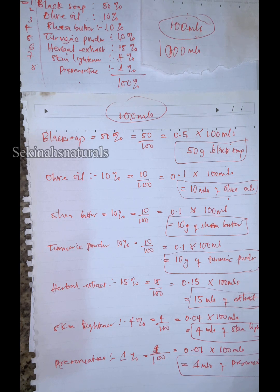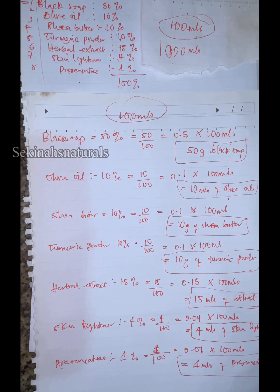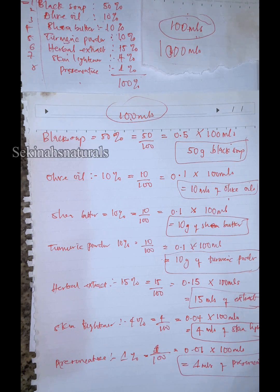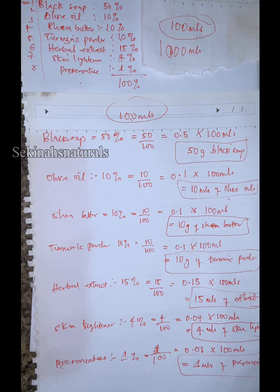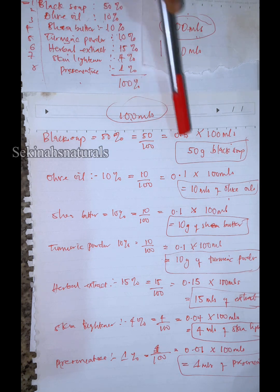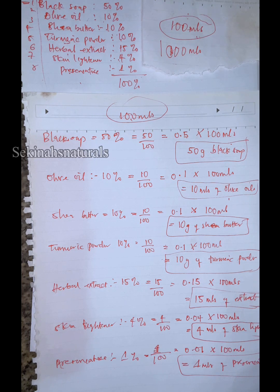Say you want to make soap just for yourself — just 100 mils. This is the recipe you'll use. Now if you want to make black soap for your business, maybe 10,000 mils — a big batch — and you want to use this exact same recipe, all you do is change this value to 10,000. Multiply 0.5 times 10,000 and you get the exact amount of black soap needed for your formulation. That is what you measure. And that's your assignment.